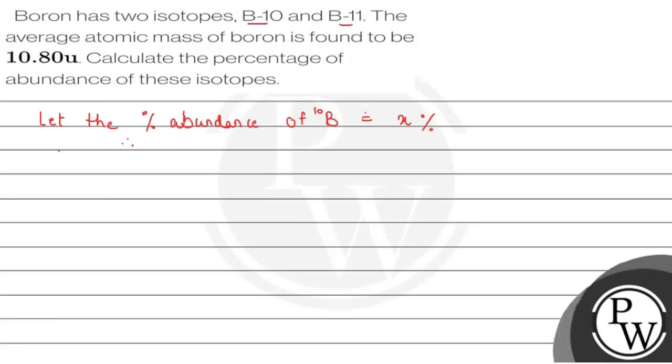Then the percentage abundance of B-11 would be (100 - x) percent. Because we just saw that sum of abundance of all isotopes must be equal to hundred. So if abundances are x and y, then x plus y should be hundred percent. With this relation, y is equal to (100 - x) percent.